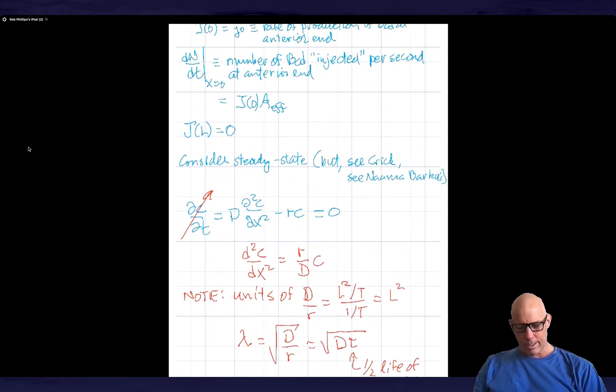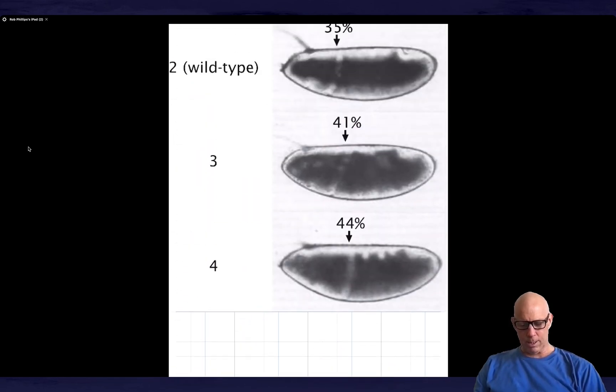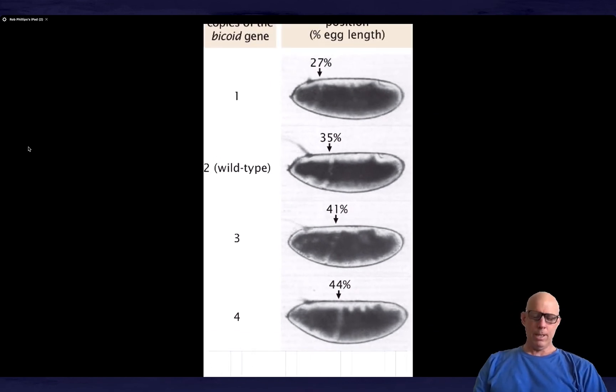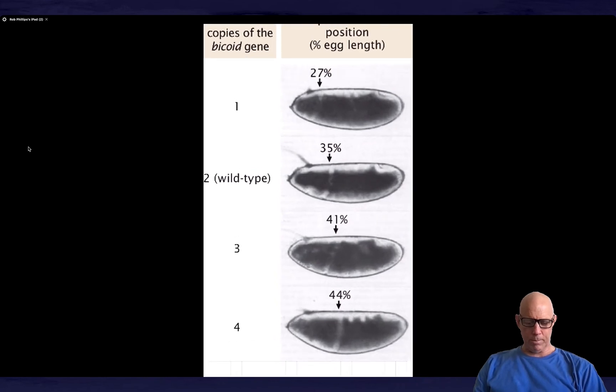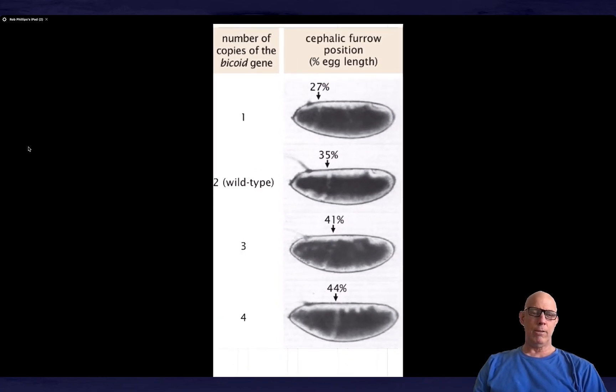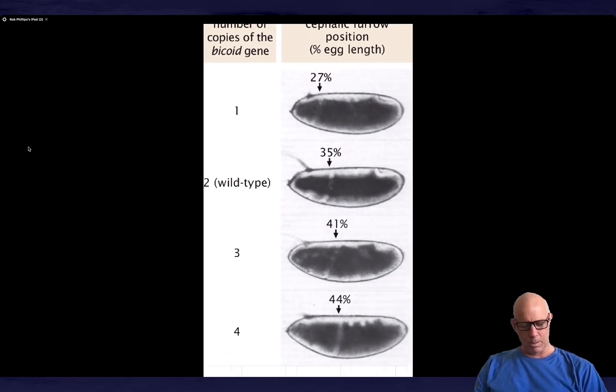And so qualitatively, I already showed you this result. But let's look at it again. So qualitatively, we see that as a function of the number of copies of the bicoid gene, the cephalic furrow position actually is shifting in the right direction. So that's to say qualitatively, it's doing exactly what we would hope.